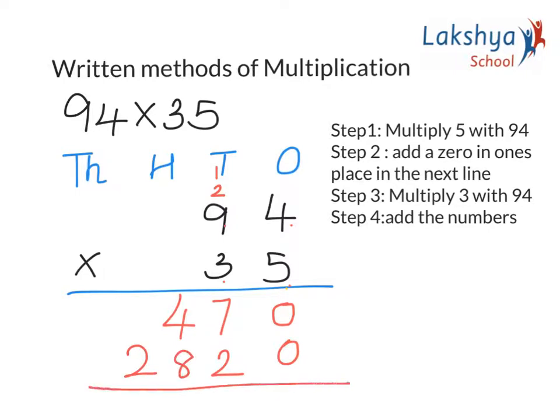So let's add this, because multiplication is nothing but repeated addition. 0 plus 0 gives me 0. 7 plus 2 is 9. 8 plus 4 is 12. So I need to carry over 1 over here. 2 plus 1 gives me 3. So the answer is 3290.